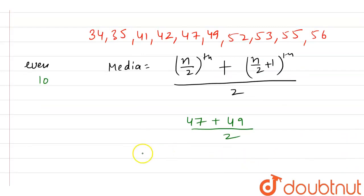Now if we solve this, then we will get here at numerator as 96, and 96 by 2 equals 48. So here we can see that the median of this question is 48, and hence this is our final answer.